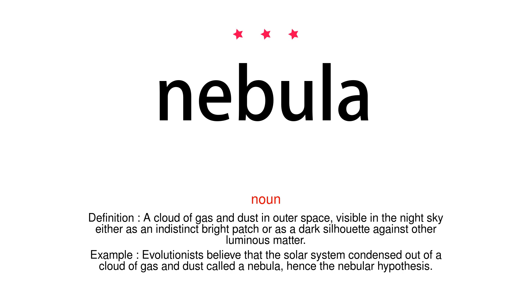Example. Evolutionists believe that the solar system condensed out of a cloud of gas and dust called a nebula, hence the nebular hypothesis.